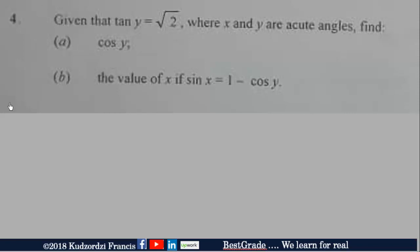Now let us tackle the fourth question. Given that tan y is equal to √2, where x and y are acute angles, find cos y. So for acute angles x and y, we're given this trigonometric ratio: tan y equals root 2.